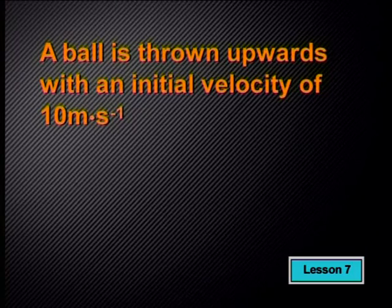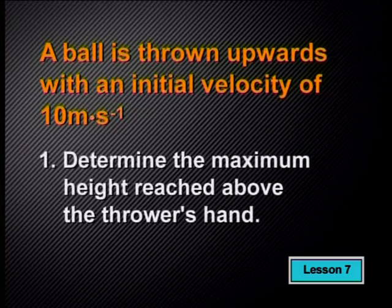A ball is thrown upwards with an initial velocity of 10 meters per second. Determine the maximum height reached above the thrower's hand. It is a good idea to draw a simple sketch before you start to answer the question. Write all the information you know onto the sketch.